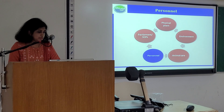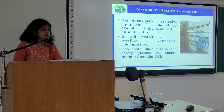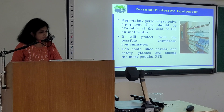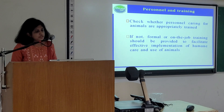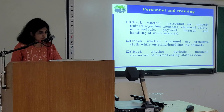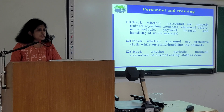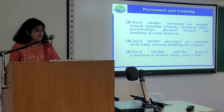The fourth constituent of animal facility is personnel. Appropriate personal protective equipment (PPE) should be available at the door of the animal facility to protect from possible extraneous contamination. Lab coat, shoe covers and safety glasses are among the most important PPE. For personnel and training, check whether personnel caring for animals are appropriately trained. If not, formal or on-the-job training should be provided to facilitate effective implementation of humane care and use of animals. Check whether personnel are properly trained regarding zoonosis, chemical safety, microbiology, physical hazards and handling of waste material, and whether they use protective clothing while entering or handling animals.